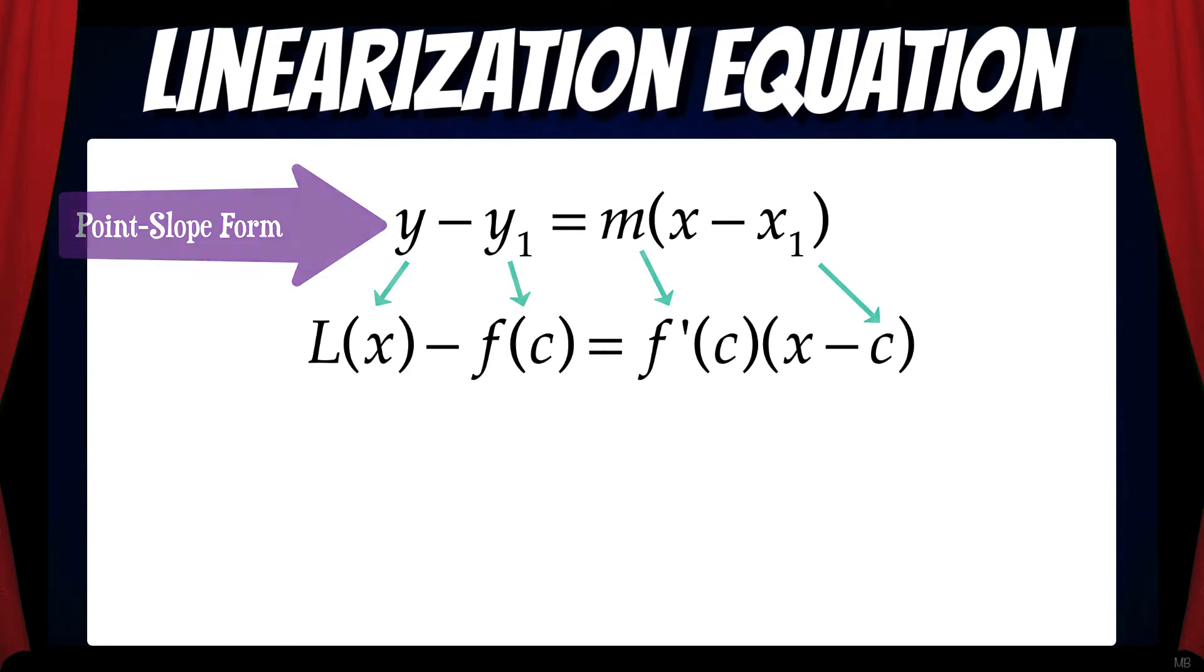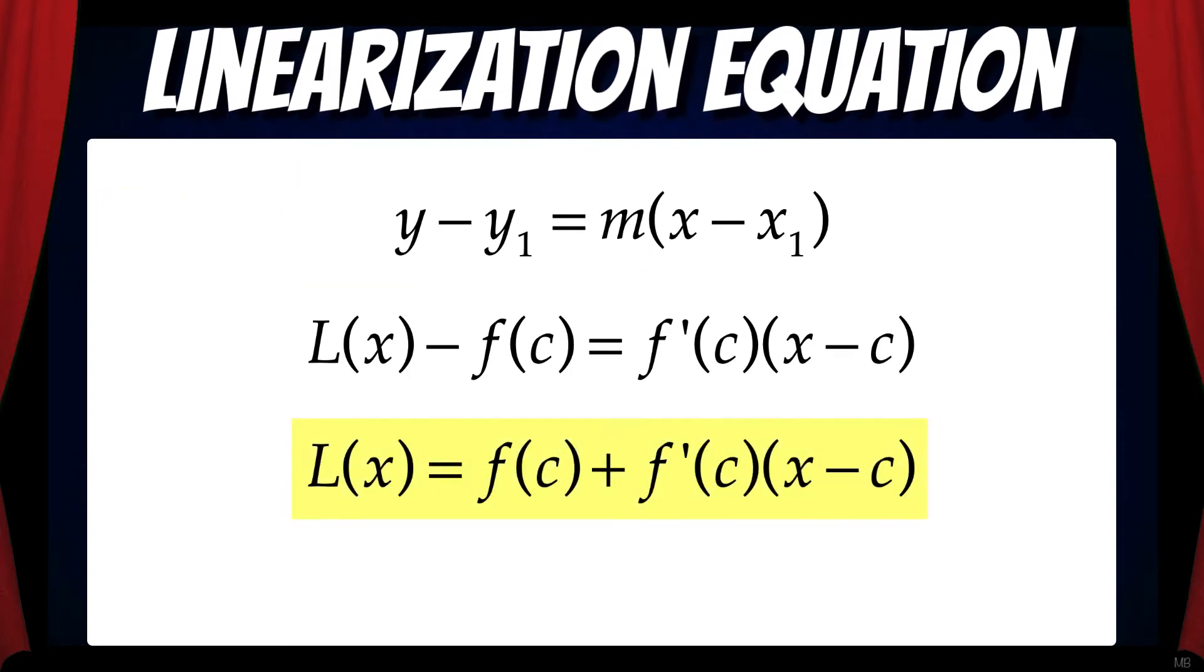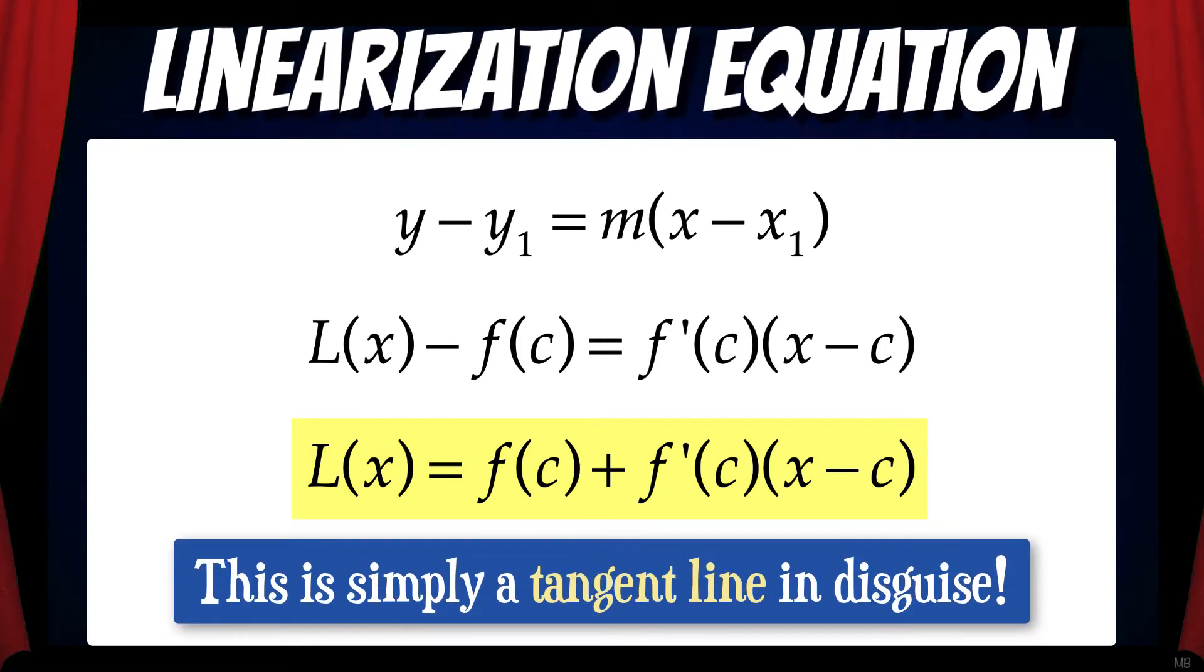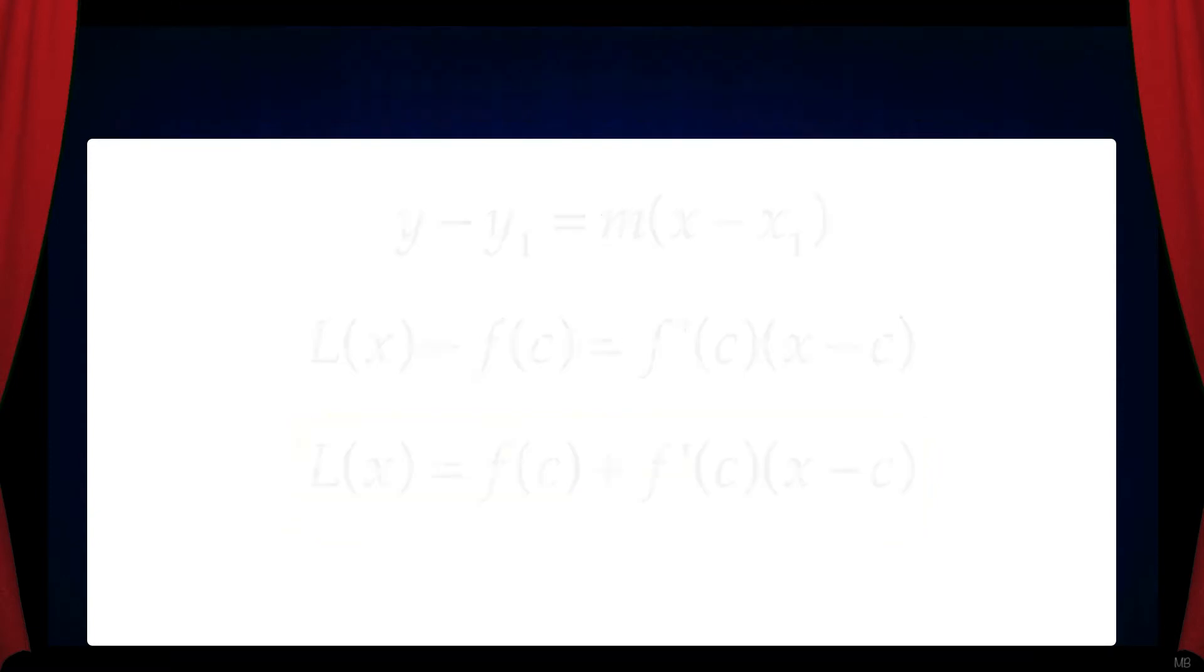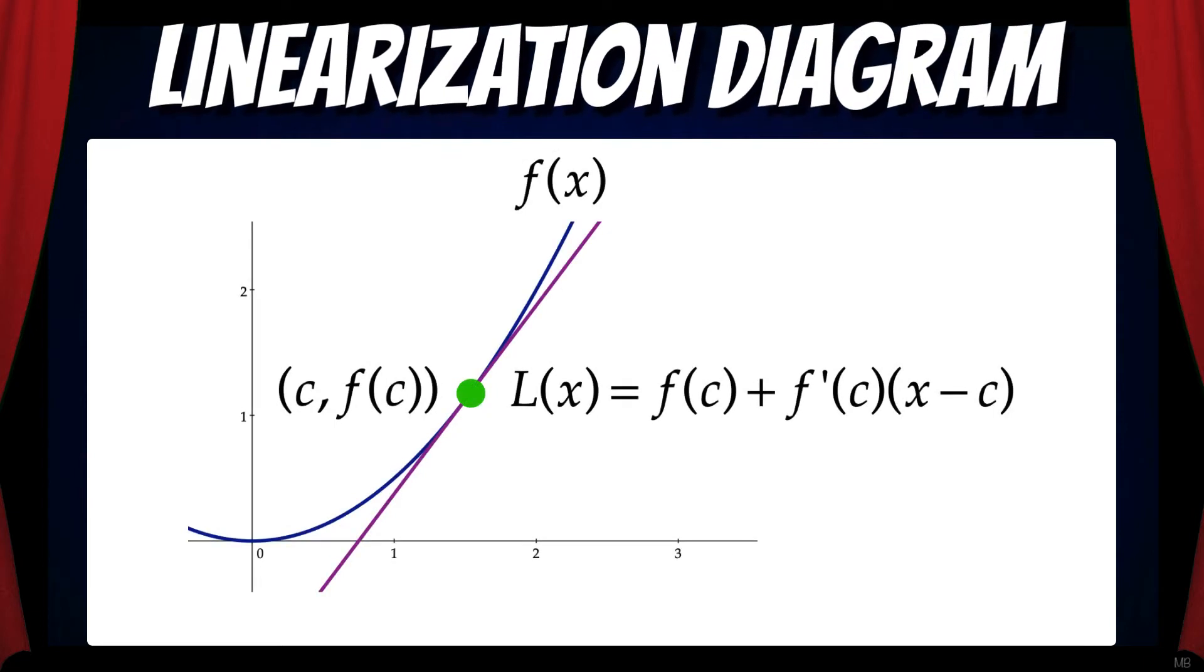Then let's solve for L of x. That gives us L of x equals f of c plus f prime of c times x minus c. This is the general linearization equation, and this is simply a tangent line in disguise. Here's a diagram that illustrates this idea. L of x is the tangent line at the point c, f of c.